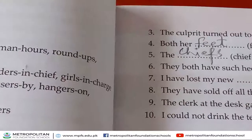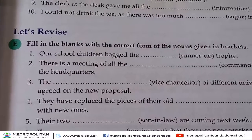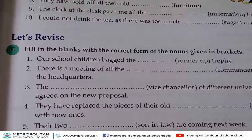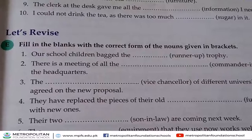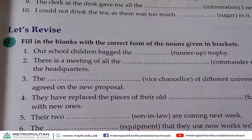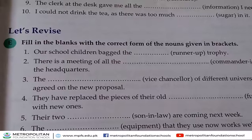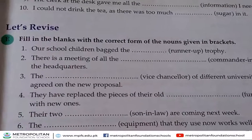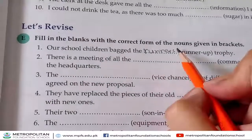Now I'm going to start Exercise E: fill in the blanks with the correct form of the nouns given in brackets. We have to use the bracket words to fill the blanks. The first one: 'Our school children bagged the ___ runner-up trophy.' We just make it the plural form — the answer is 'runner-up'.